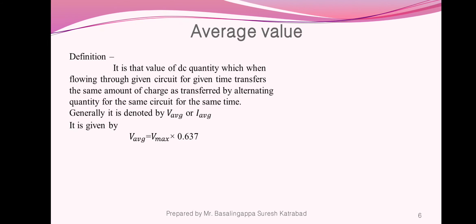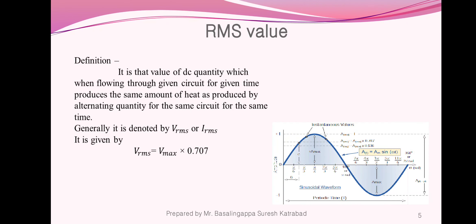Next, average value. It is that value of a DC quantity which, when flowing through a given circuit for a given time, transfers the same amount of charge as transferred by the alternating quantity for the same circuit for the same time. It is denoted by V_average or I_average. It is given by V_average equal to V_MAX multiplied by 0.637. In the graph, we have shown the RMS value and average value.